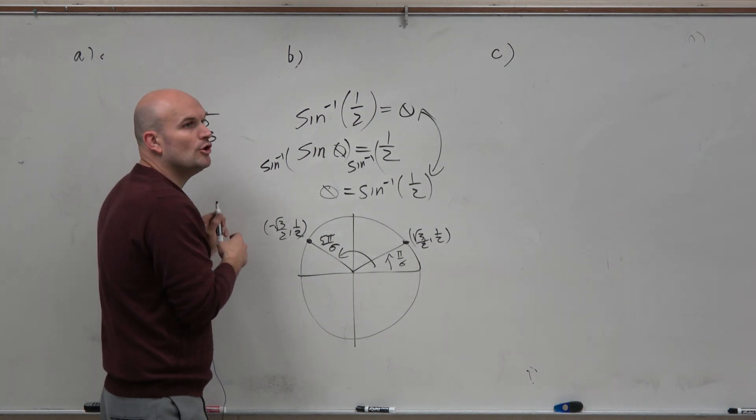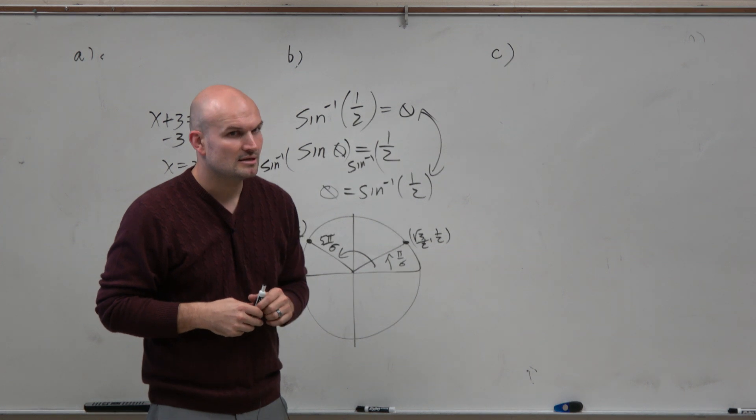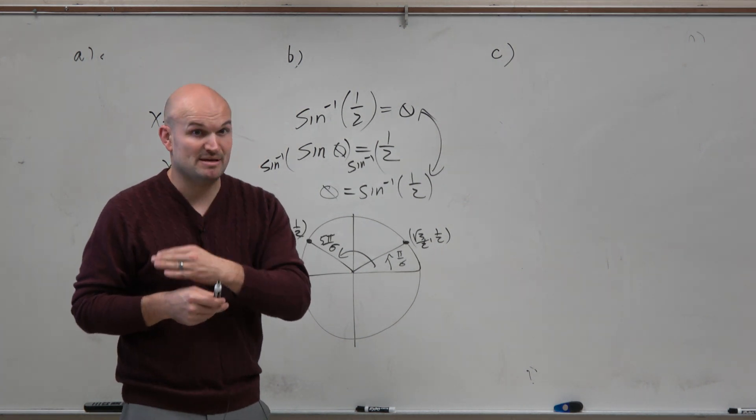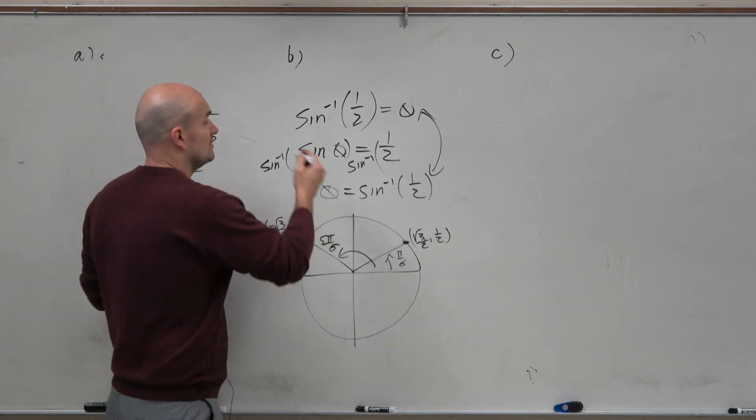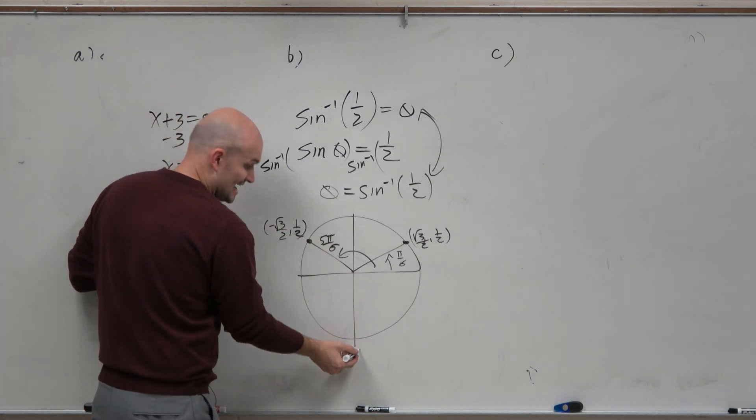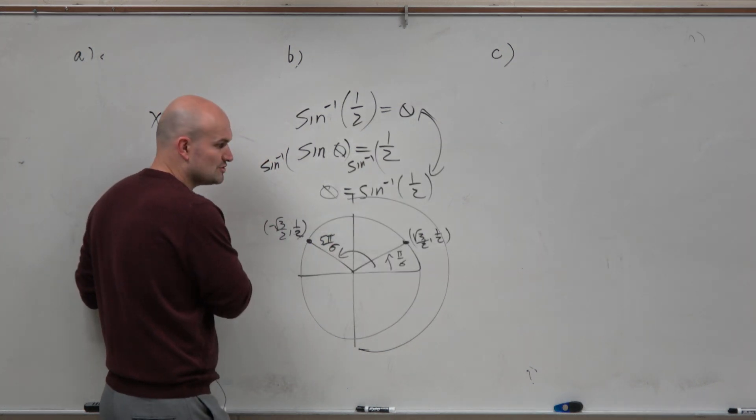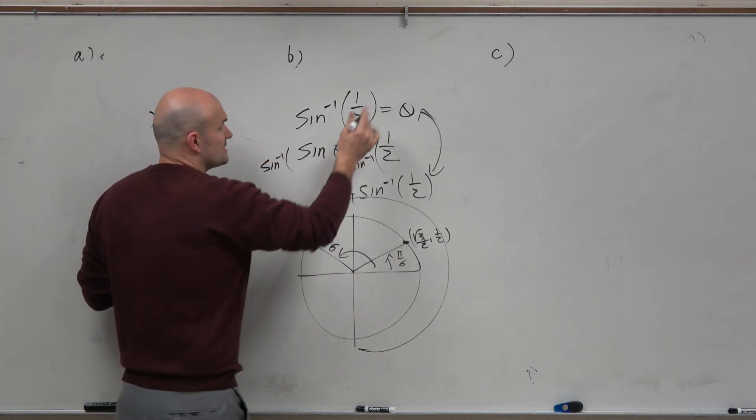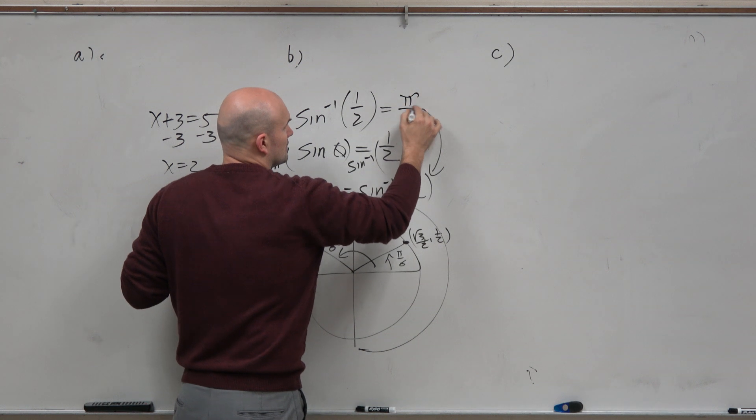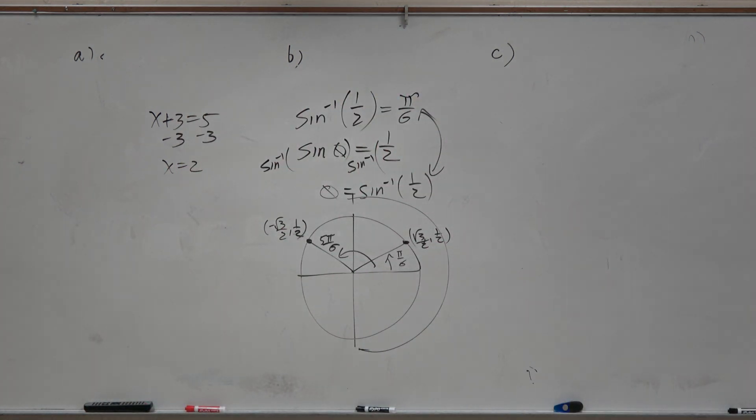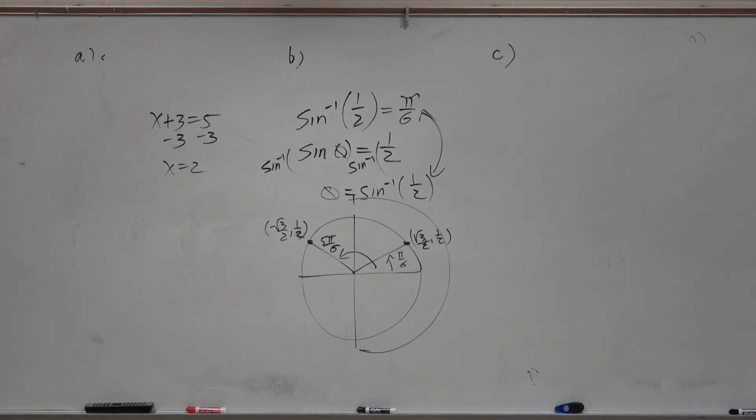Well, again, go back to our restrictions. How did we restrict the angles for sine? The angles had to be between negative pi halves and pi halves. What is the only angle that fits that restriction? Pi over 6. There you go. Does that make a little sense?